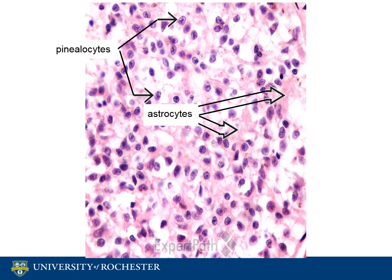The second type of cell found in the pineal gland is the astrocytes. They are pale and elongated in shape and form the remaining 5% of the pineal gland. They are found throughout the nervous system and help support neurons, or in this case, the pinealocytes.